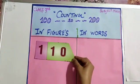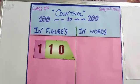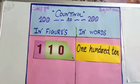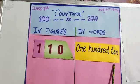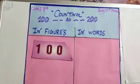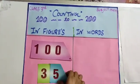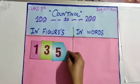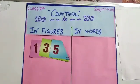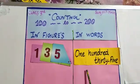110 in figure: 110. In words: one hundred and ten. The next numeral is 135. 135 in words: one hundred and thirty-five.